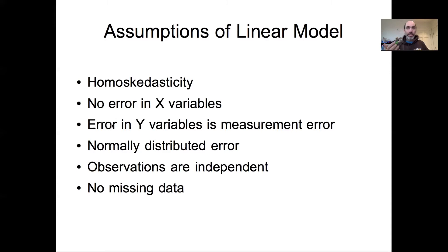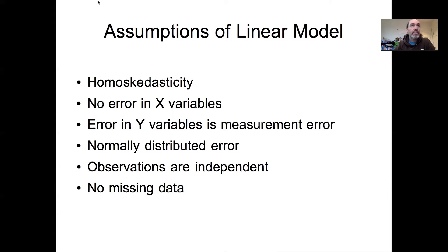We also assume that the error in the y variables is just observation error — measurement error — not errors in the process itself. It's based on the idea that we're writing down the right model and there's uncertainty in the data, not the model. There's also an assumption that the error is normally distributed, that observations are independent (which we'll eventually relax for spatial and time series models), and that there is no missing data.